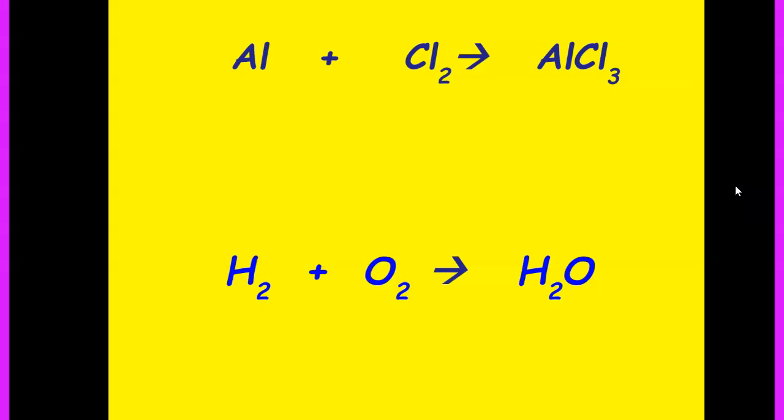The first one, the Al, aluminum, plus the chlorine, Cl₂, to produce aluminum chloride, AlCl₃, I am going to balance using what's called the inventory math method.